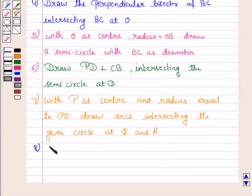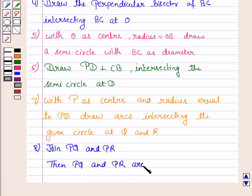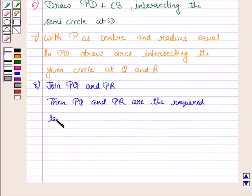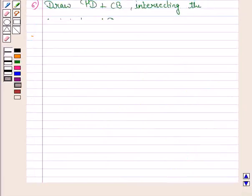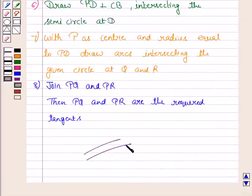Now the last step is join PQ and PR, then PQ and PR are the required tangents. So PQ and PR are the required tangents and this completes the construction and the session. Bye for now, take care, have a good day.